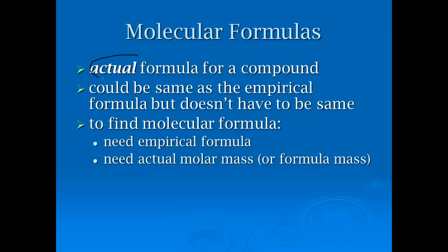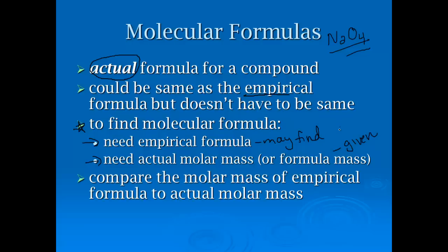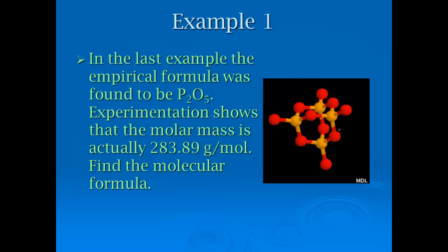Molecular formulas are a little bit different. They're the actual formula for a compound. Just like we saw with the dinitrogen tetroxide, this would be the molecular formula. It can be the same as the empirical, but it doesn't have to be. To find the molecular, you need two things: the empirical formula of the compound and the actual molar mass or formula mass of the compound. A lot of times you have to find the empirical, but the actual molar mass is going to have to be given to you. We compare them to see how they relate to one another.